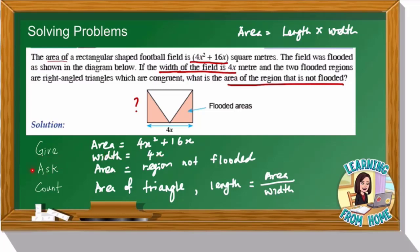The second step is 'ask' — what is the question asking? The question asks us to find the area of the region that is not flooded. To find this, we use the area of the rectangle minus the area of the two triangles.